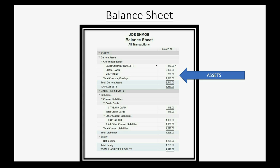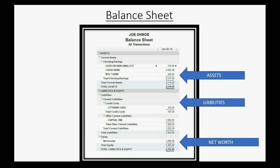The Balance Sheet shows the other numbers that come from the Trial Balance. It shows the assets and what you paid for each asset, and the balance of each bank account. It shows each separate debt or obligation that you have and how much that obligation is at the moment you're running the Balance Sheet. And then the bottom section shows your net worth as an individual or family.